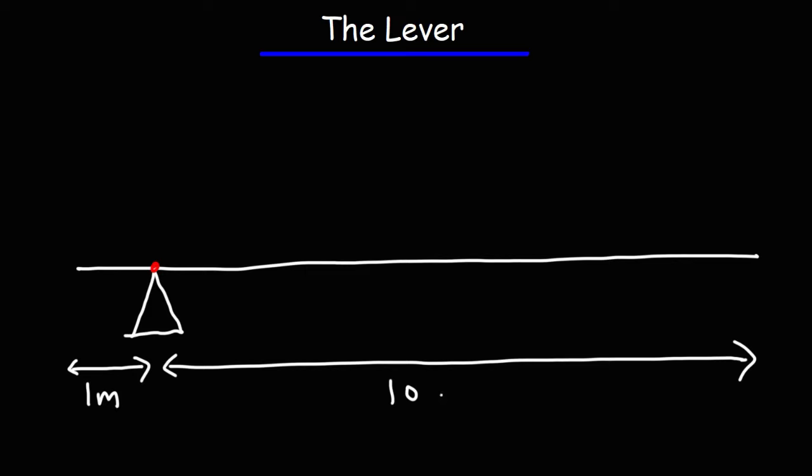It may not be drawn to scale, but we'll go with this. If we were to apply an input force of 100 newtons on the right side, what's going to be the output force?